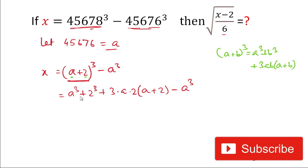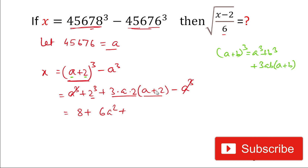Our next step is to simplify this expression. Here a cubed and a cubed cancel out. The value of 2 cubed is 8, plus 3 times 2 is 6, so we have 6a. Multiplying 6a by the bracket (a plus 2) gives 6a squared plus 12a. So x equals 8 plus 6a squared plus 12a.